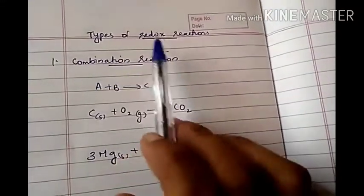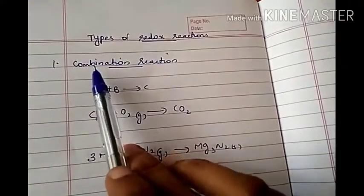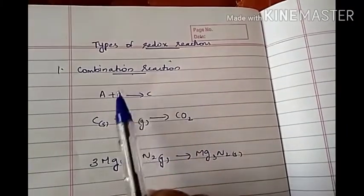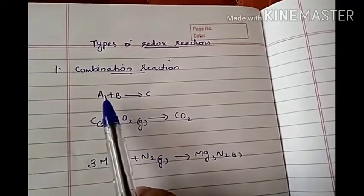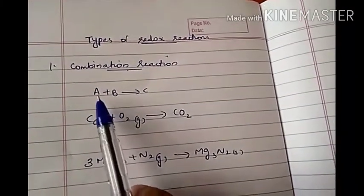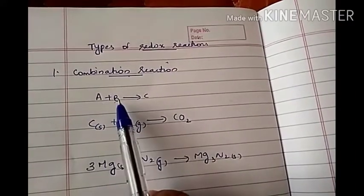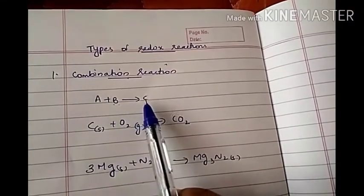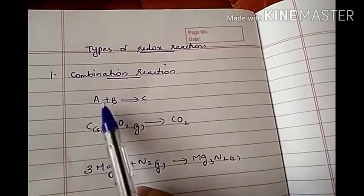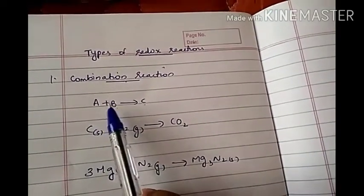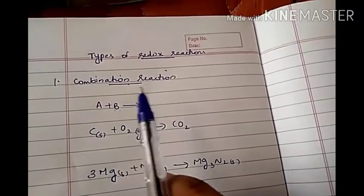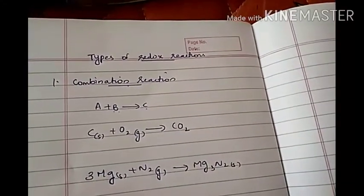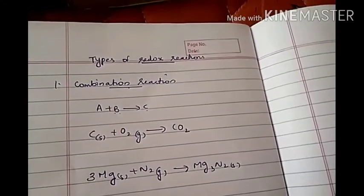Next we have to study about types of redox reactions. The first type of redox reaction we have to study is combination reaction. In this combination reaction, either two elements or one element and one compound react with each other forming another compound. Two elements or one element and one compound reacting with each other forming a compound is known as a combination reaction.